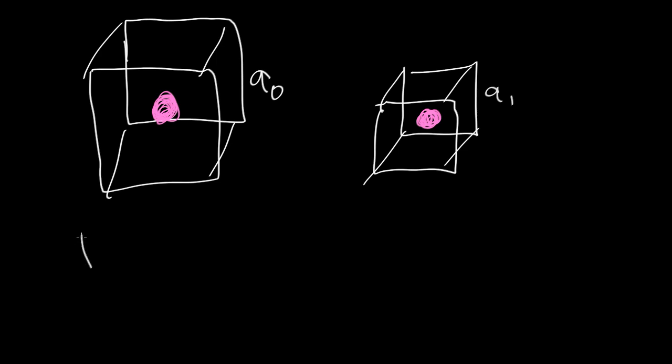Now if I want to figure out how the density back in the past compared to the density now evolves, I just measure the density, for example, back in the past. And that's equal to the mass in the box divided by the volume of the box, which is the scale factor cubed, because it's a cube with length a1.